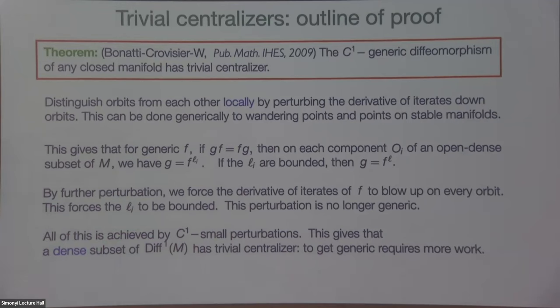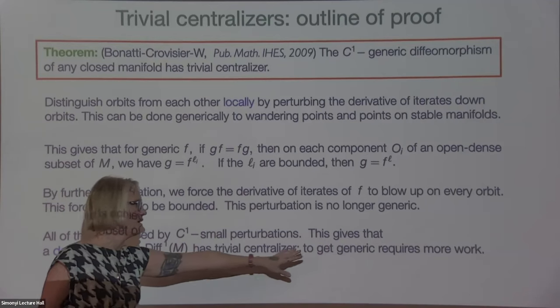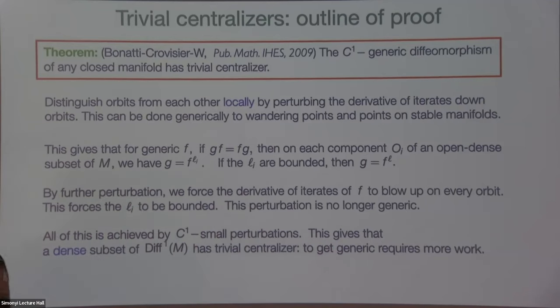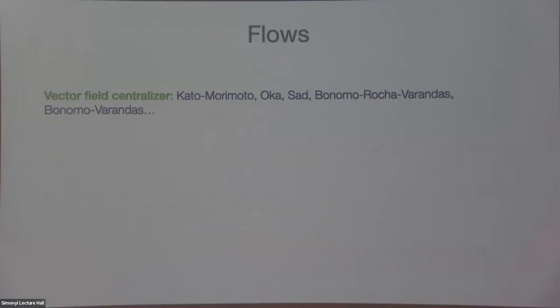Once you have the L's bounded, it's not much harder to show they have to be constant — constant along orbits of non-periodic points. Then you just have to deal with periodic points and it's not hard. This gives a dense set with trivial centralizer, and then to get a residual set requires some tricks.